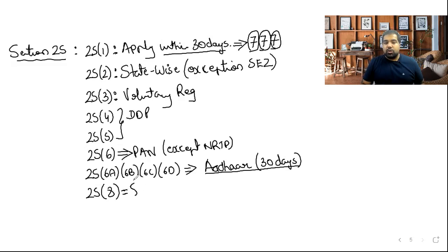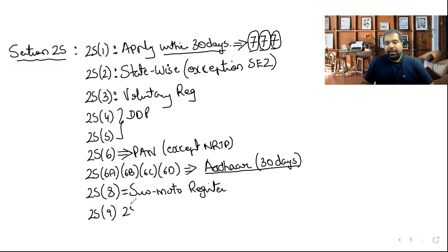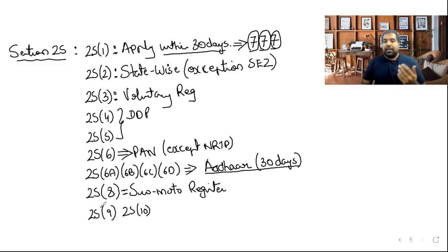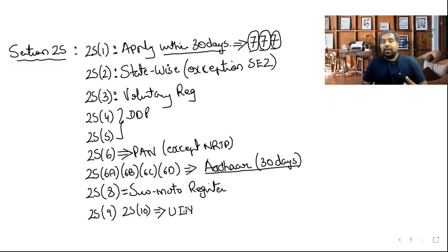Section 25(8): The GST officer can suo motu register you if he feels you should be registered; you can apply to convert that to a proper registration or appeal against it. Sections 25(9) and 25(10): Embassies, consulates, and UN offices in India get a Unique Identity Number — since they pay GST on purchases but their services are exempt, this UIN lets them claim a refund of GST paid.